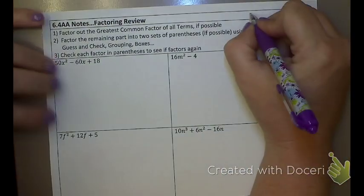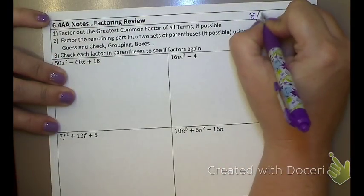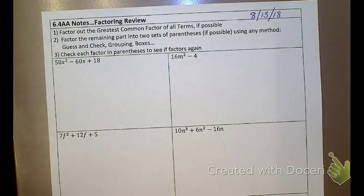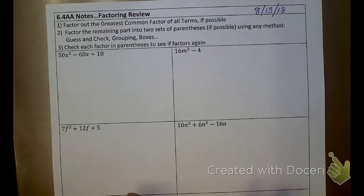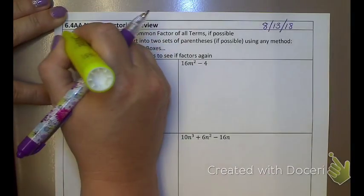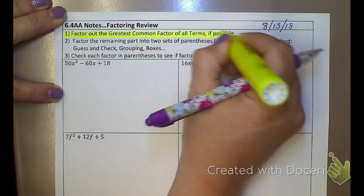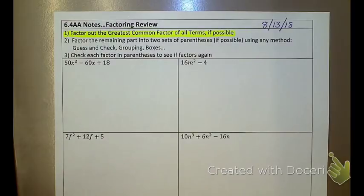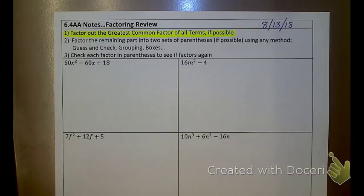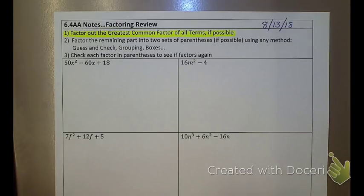Okay, so here we go. It is Monday, August 13th, 2018. We're going to be doing some factoring. In this factoring, this should all be a review, but the first step always has to be the same. First step you want to do is you want to always look to see is there something that all the terms have in common that I can take out.